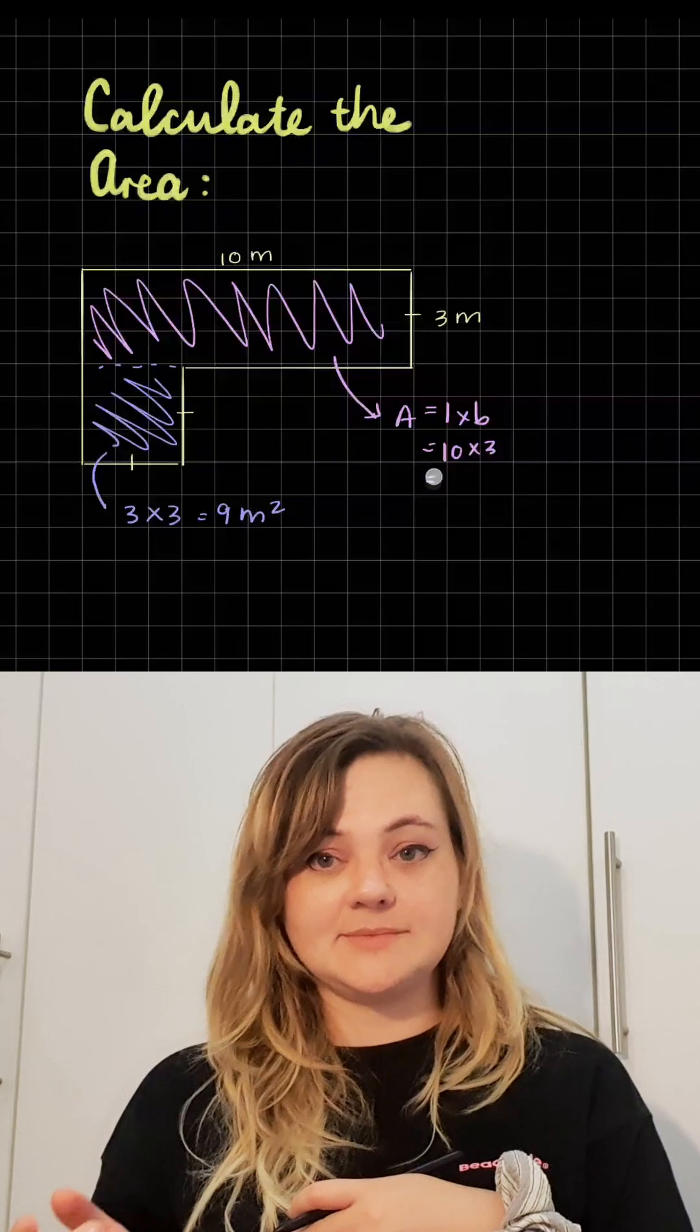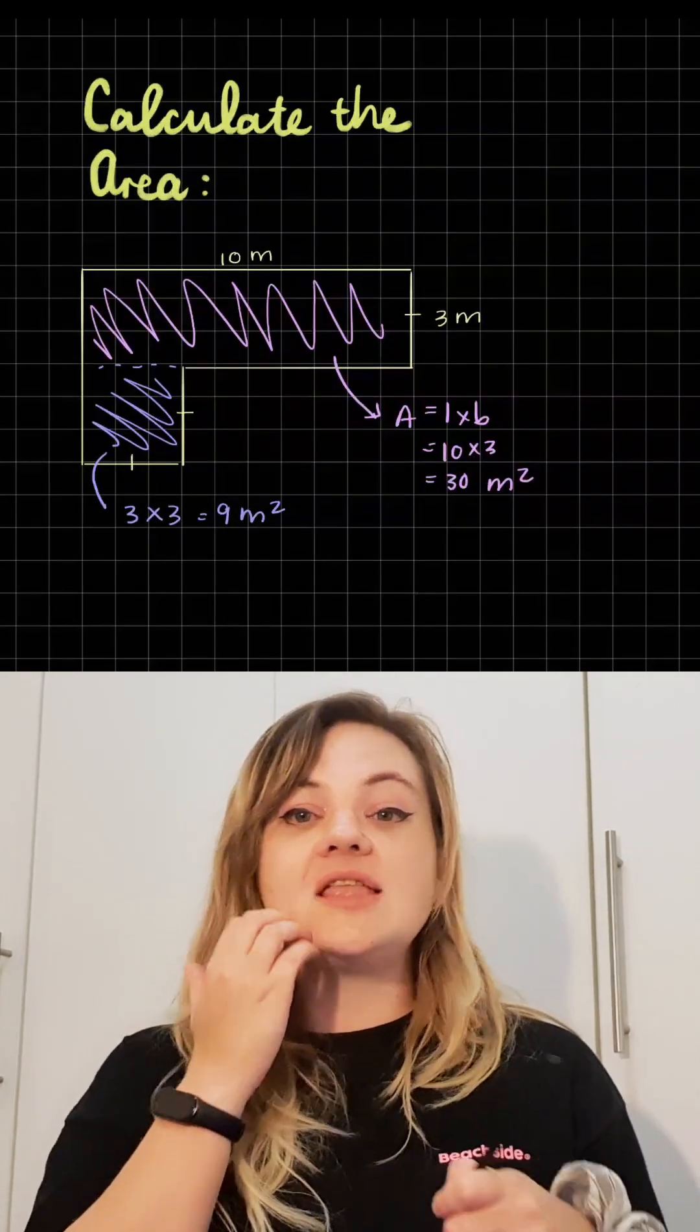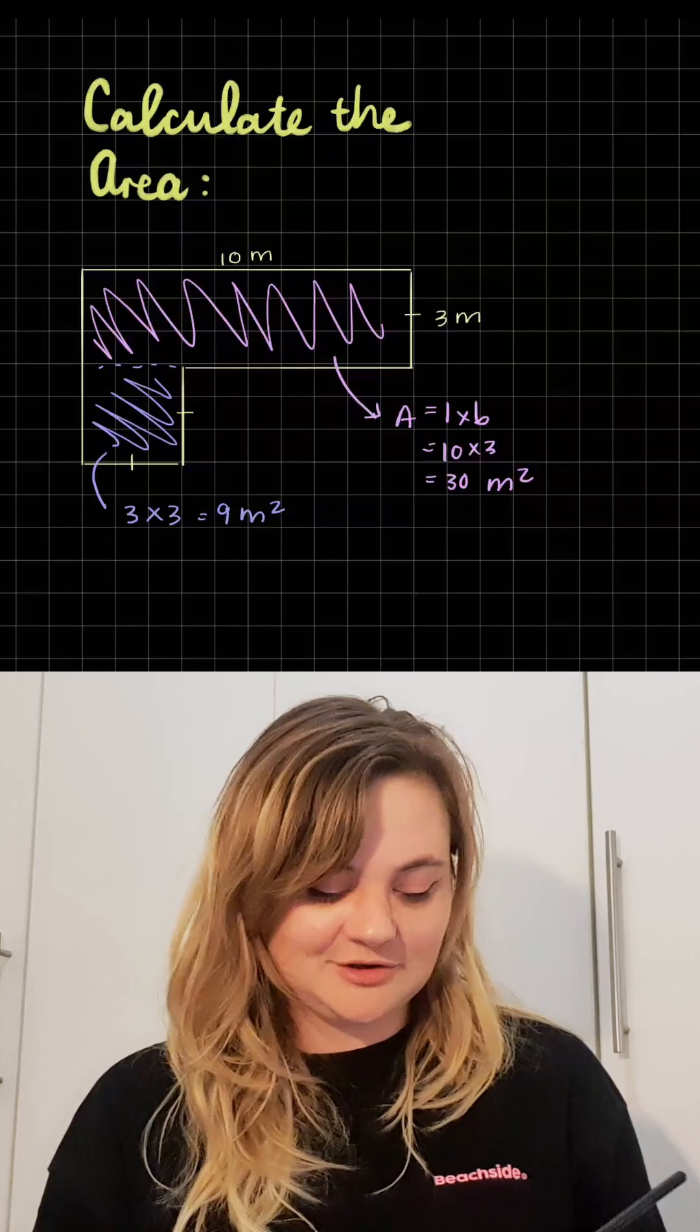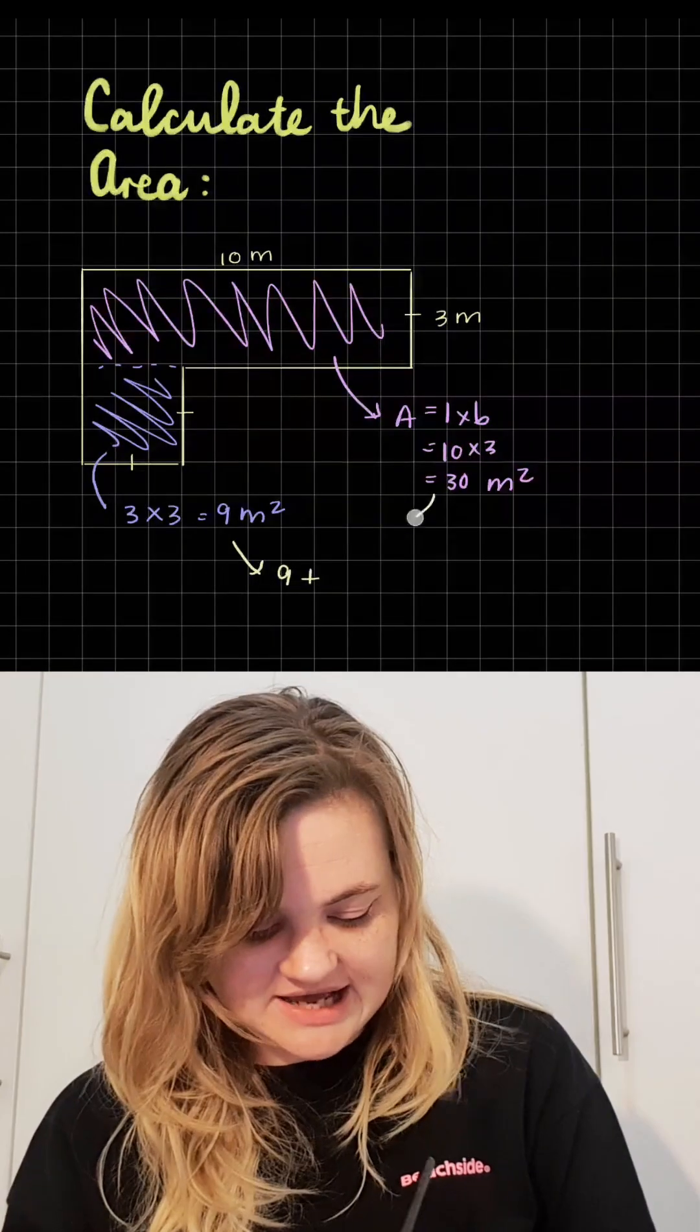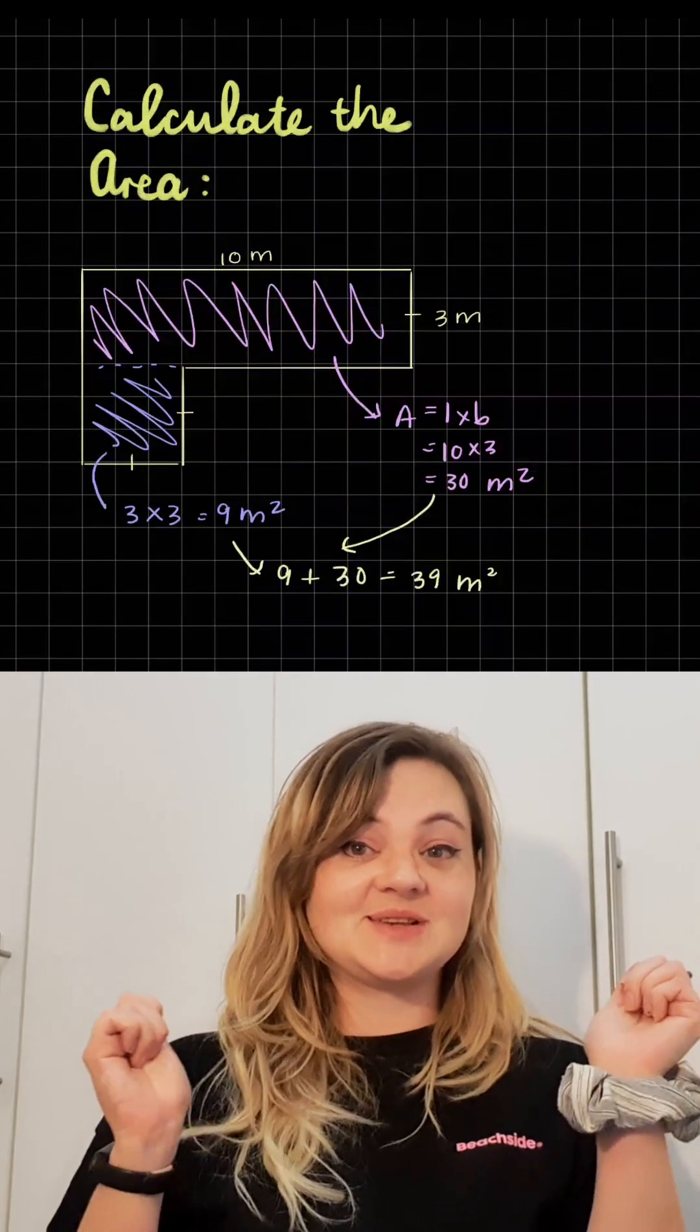Which in this case is 10 times 3, which gives us 30 meters squared. And then for our final step, we add them together: 9 plus 30 gives us 39 meters squared.